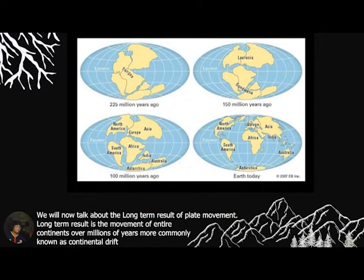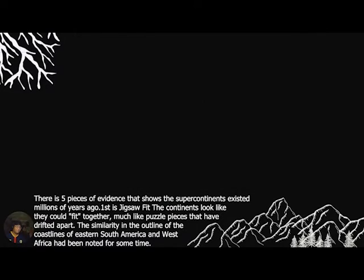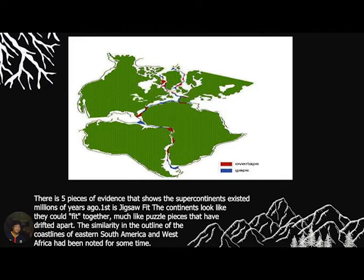We will now talk about the long-term results of plate movement. The long-term result is the movement of entire continents over millions of years, more commonly known as continental drift. In the continental drift theory, Alfred Wegener proposed that the continents were once united into a single supercontinent called Pangaea, meaning 'all earths' in ancient Greek. He hypothesized that continents were moving slowly, and that about 250 million years ago there is evidence of five pieces showing that this supercontinent existed.